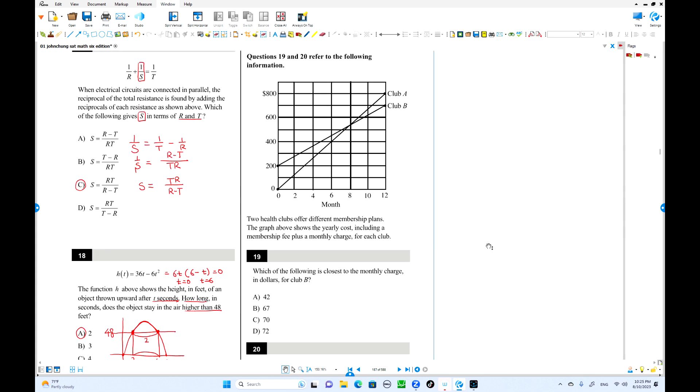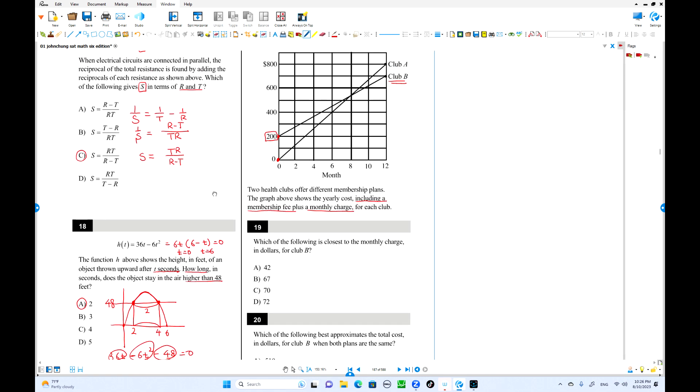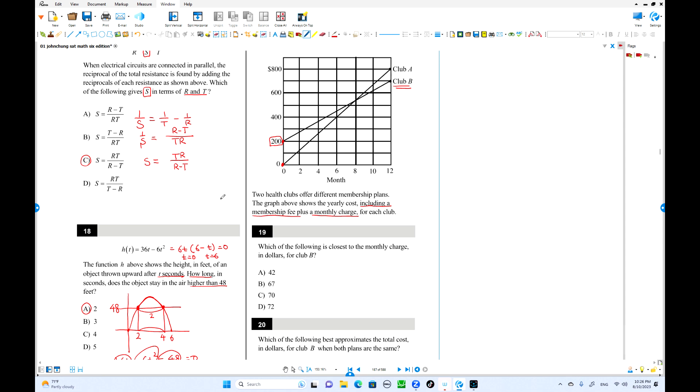This is number 19. Two health clubs offer different membership places. The club A and the club B. This club A is initially zero. That means there is no membership fee up here, because the graph shows membership fee plus monthly charge. Table of club B: Club B starts from 200. This is membership. And the slope of the line is monthly charge. So we're going to find number 19. Which of the bar is closest to the monthly charge in dollars for club B? This is the club B up here. Monthly charge is slope of this. Slope of the line. How can you find slope of the line? We need two points.